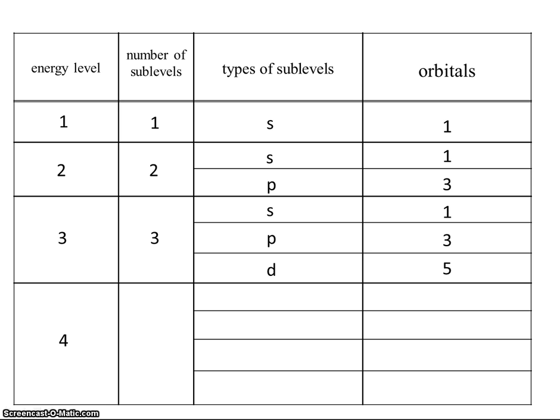Energy level 4 has four sublevels: s, p, d, and f. The s sublevel has one orbital. The p sublevel has three orbitals. The d sublevel has five orbitals. And the f sublevel has seven orbitals.